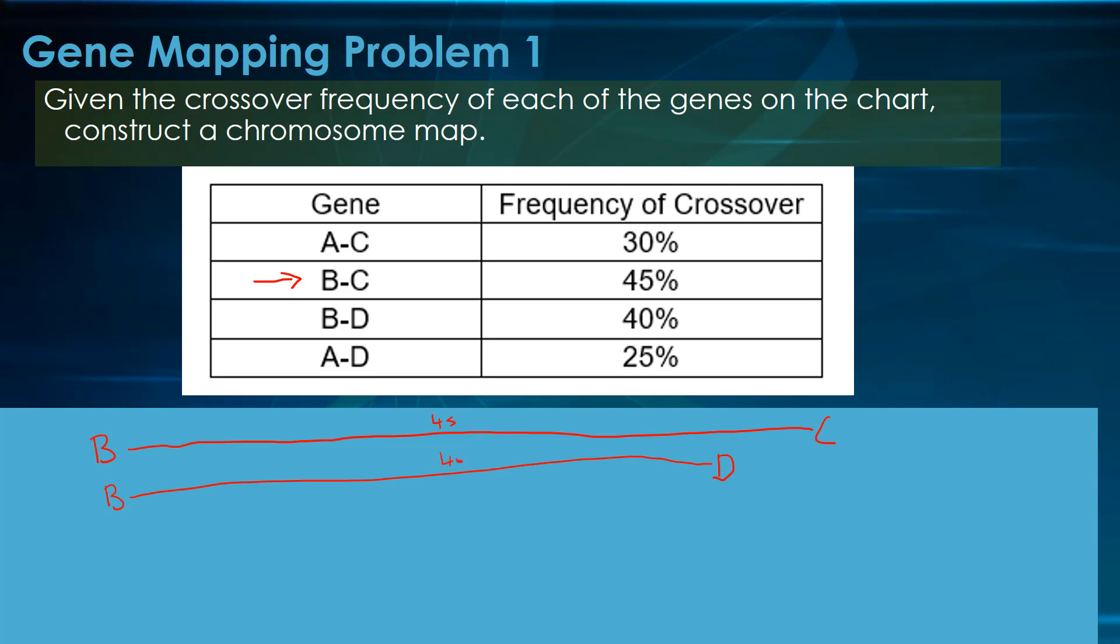Next is A to C. So it's only 30, so A must be, if this distance up here is 45, A must be somewhere around here. A to C, 30.